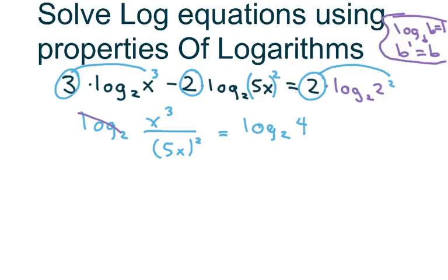Now basically, since you have 1 log on each side, you can not deal with those anymore and then just solve. So what we're going to get is x³ over 25x² equals 4. And when you cross multiply, you get x³ equals 100x².